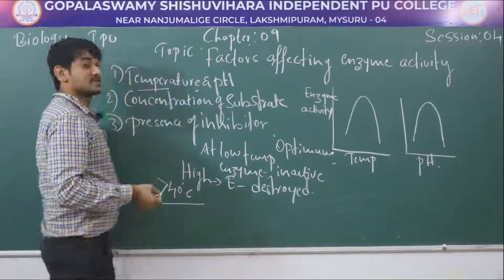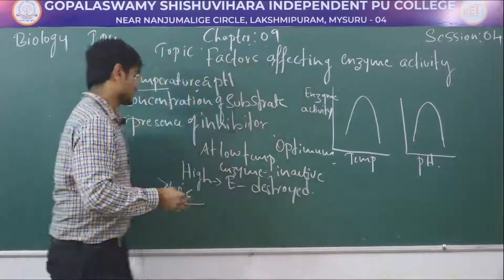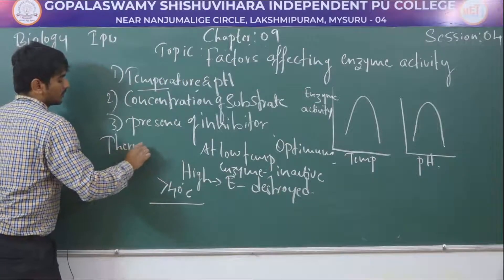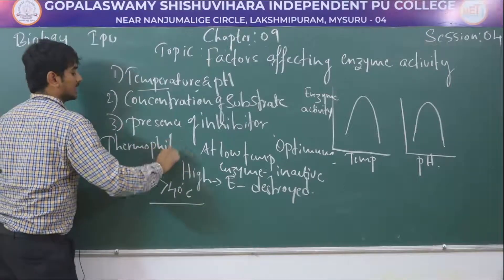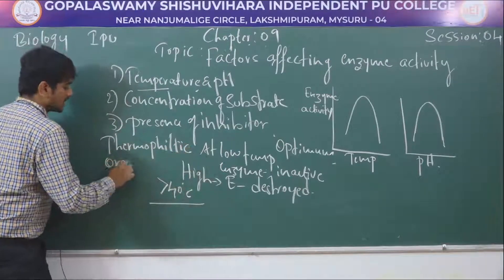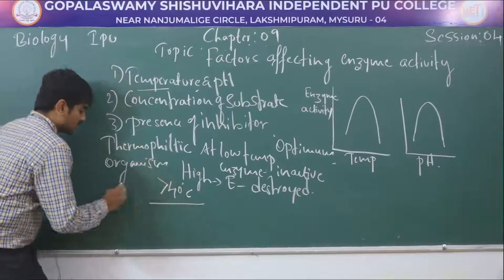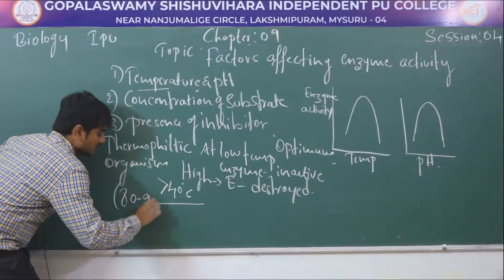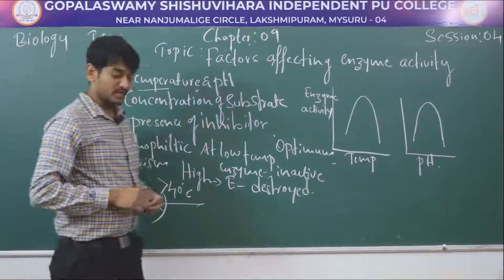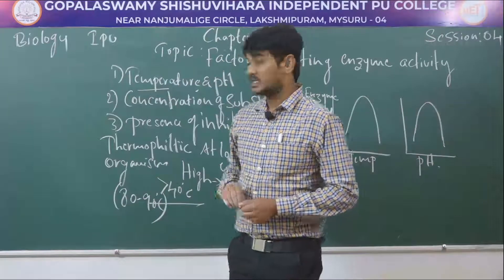There are some enzymes obtained from thermophilic organisms. These enzymes are stable up to 80 to 90 degrees. This is all about temperature and pH — temperature and pH is one of the factors affecting enzyme activity.